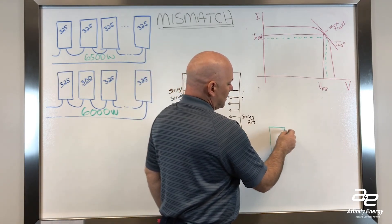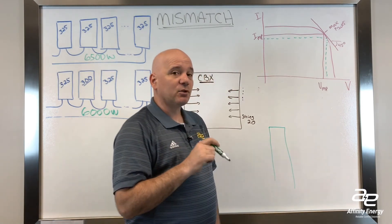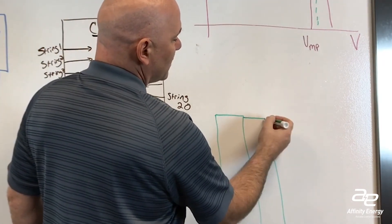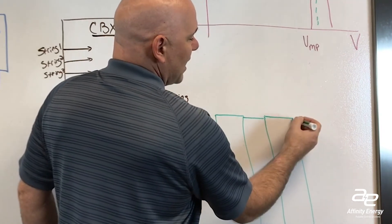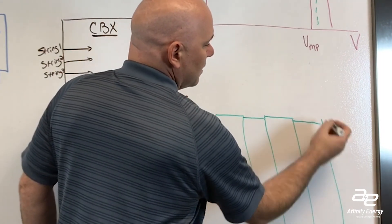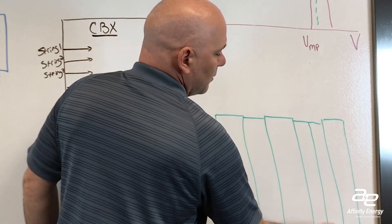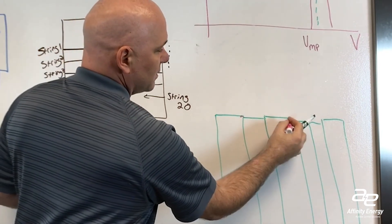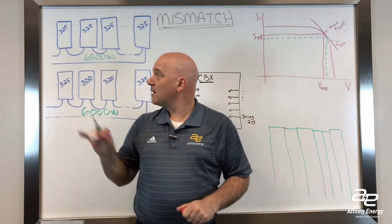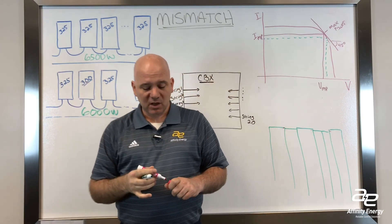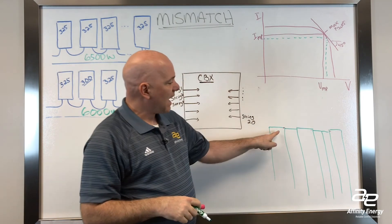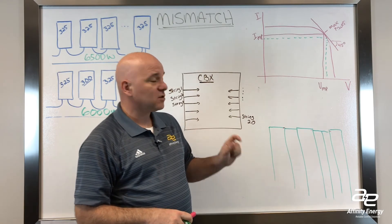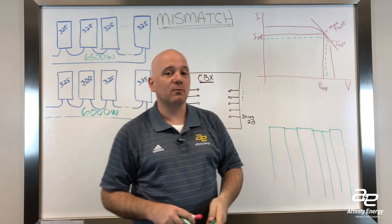As a final thought, when you normalize the data, what you might see is the average current per string from each combiner box in your plant. If you have a very small difference from one to the next, over time this difference might not be super impactful. But these little tiny differences will add up, and something as small as one missized module or a module with a crack will have an effect on the total output from the combiner box — because that one small change is trying to move everything in that combiner box around on its max power point.